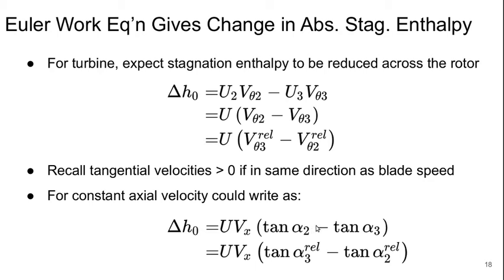times either tan alpha 2 minus tan alpha 3, or tan alpha 3 rel minus tan alpha 2 rel. For a rotor, the relative angles are often the ones that are easier to know.